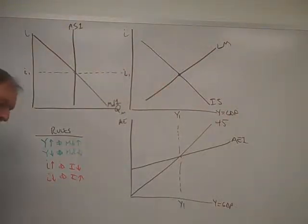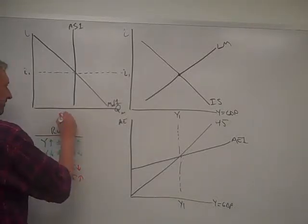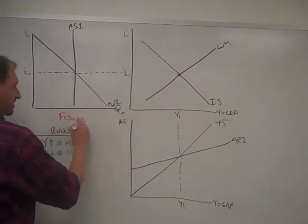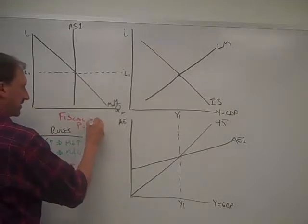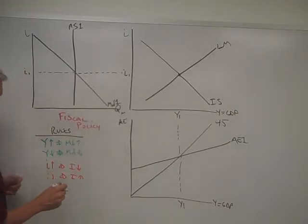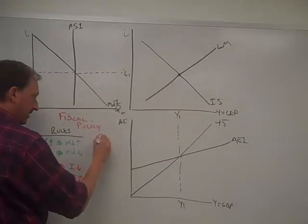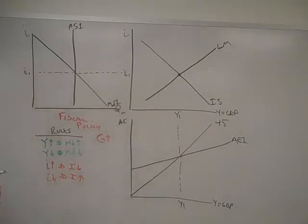Let's explore fiscal policy using the IS-LM model. Fiscal policy is the manipulation of government spending or taxes to alter economic outcomes. Let's simplify things and just call it G up. The government's going to spend more money to increase GDP and return an economy to recovery.